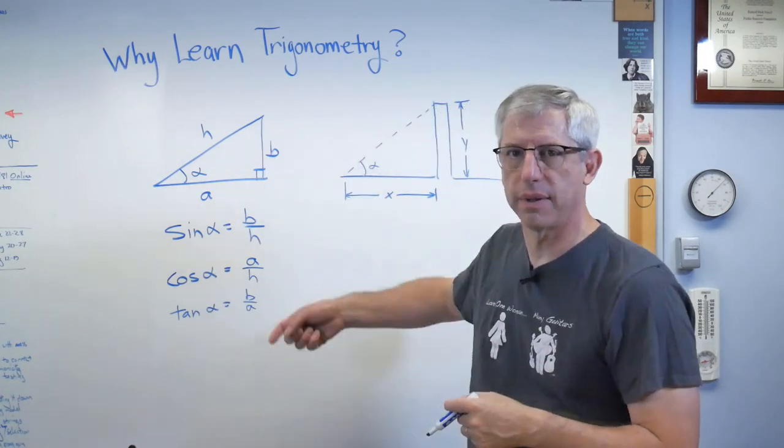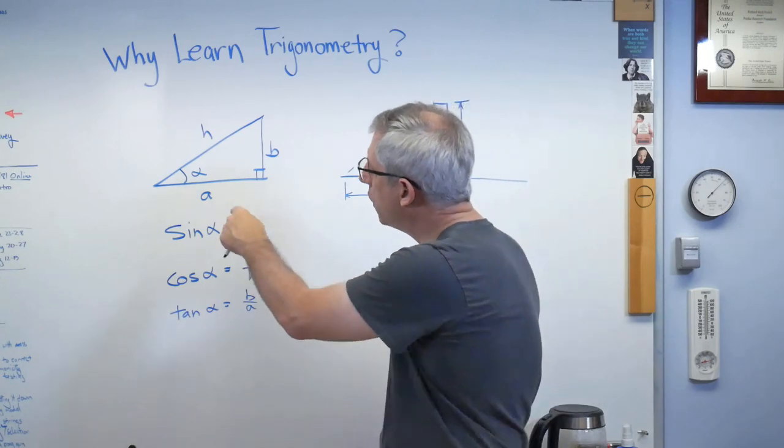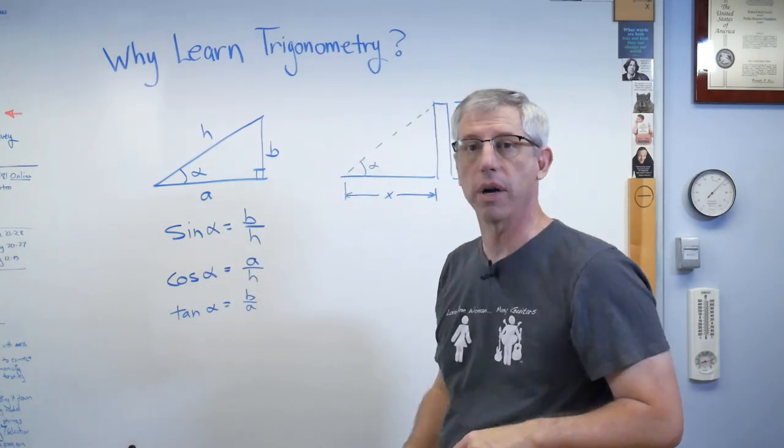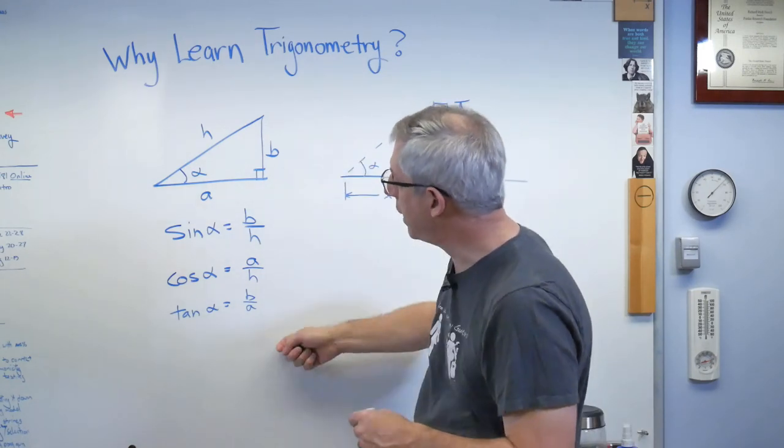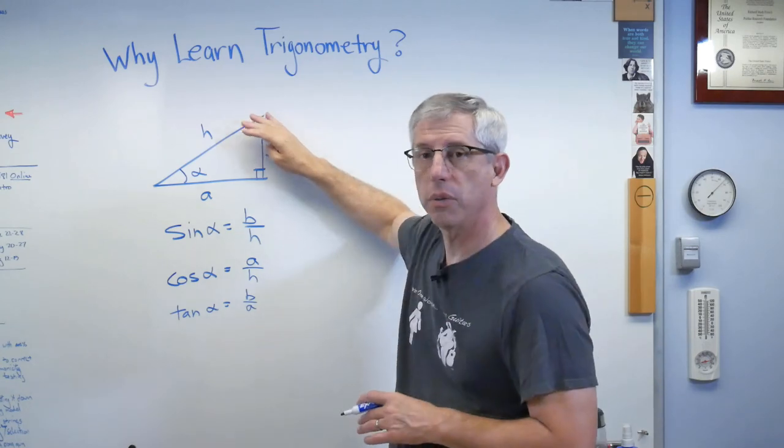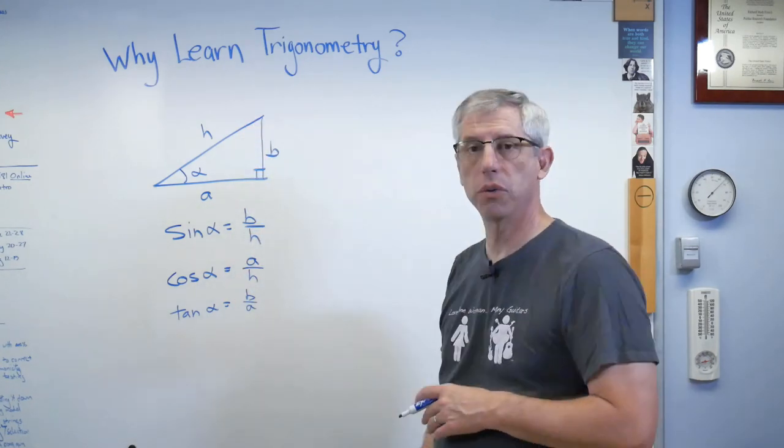Alright, so this is the beginnings of geometry. We can take those three relationships, and we can use it to calculate all kinds of things that we care about. It starts with geometry, but now numbers are about to come out. So, we start with these three functions.